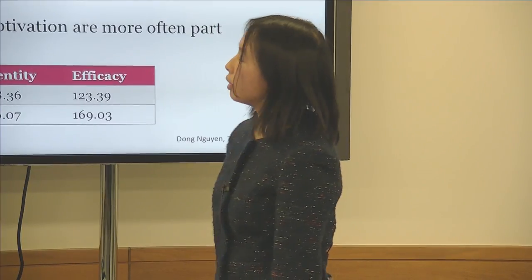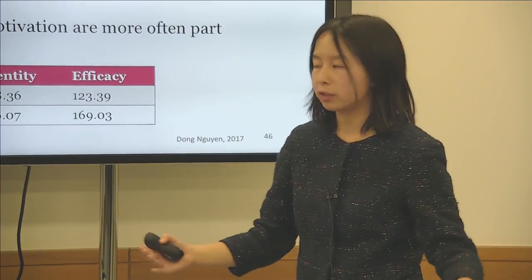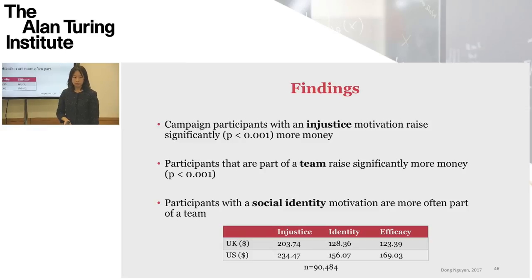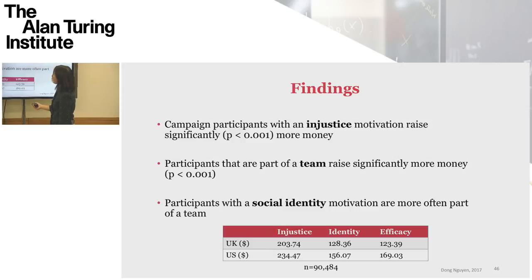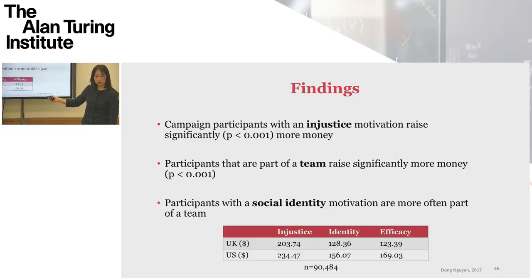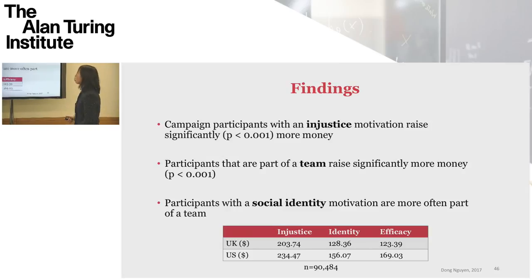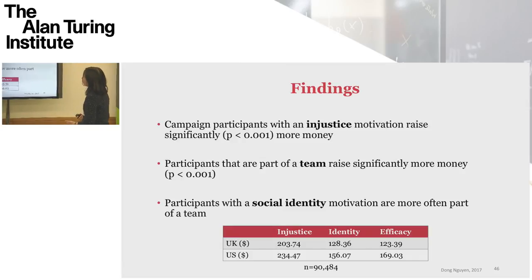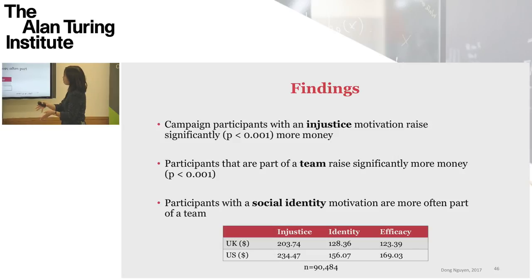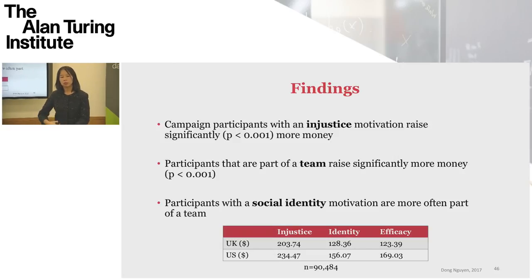We then applied our classifier to all the Movember profiles that we had — about 90,000 profiles — looking at the US and UK. We do see that people with an injustice motivation raise significantly more money than people with other types of motivation. We also see that participants with a social identity motivation are more often part of a team, and that people who are part of a team raise significantly more money. So this is an example where we can take a model from social sciences and apply it to large-scale amounts of text using machine learning.